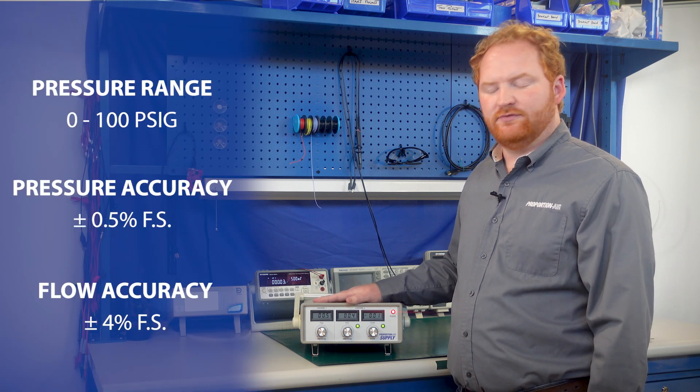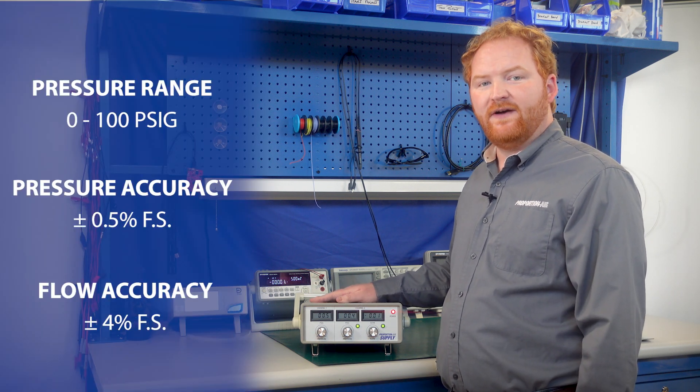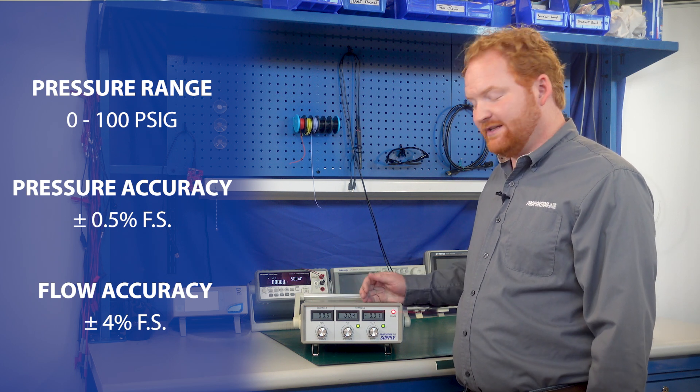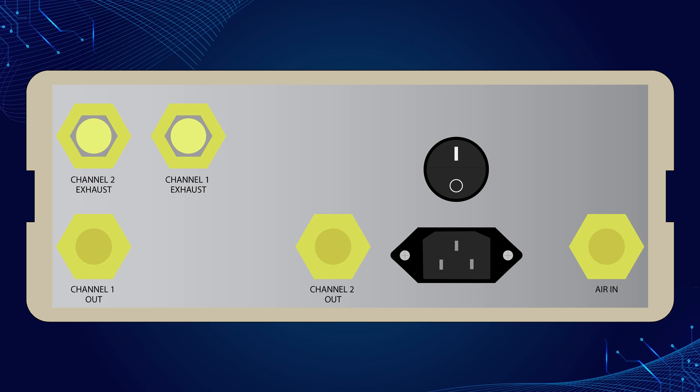For both channels, the pressure is regulated to up to ±0.5% full scale and the flow is regulated to ±4% full scale. Connections are available on the back of the unit.